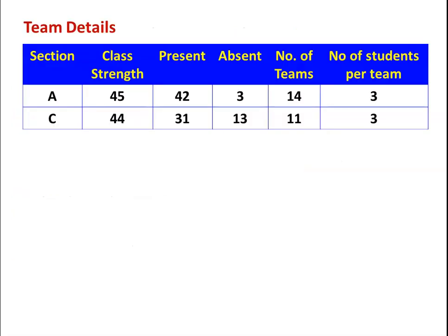Regarding team details: Section A has a class strength of 45. On the day of the activity, 3 students were absent, so there were 42 students, forming 14 teams of 3 students per team. In Section C, the class strength is 44. The number of students present was 31, with 13 absent, forming 11 teams — nine teams of 3 members and the last 2 teams of 2 members.